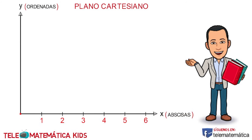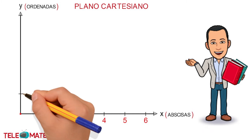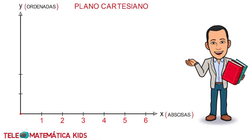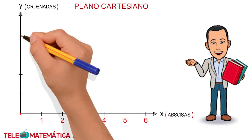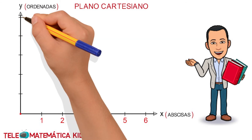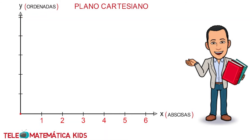De forma similar, el eje Y se divide también en partes iguales a partir del origen de coordenadas. Y también, a partir del origen de coordenadas, que se toma como cero, se enumera de forma ascendente con valores positivos.